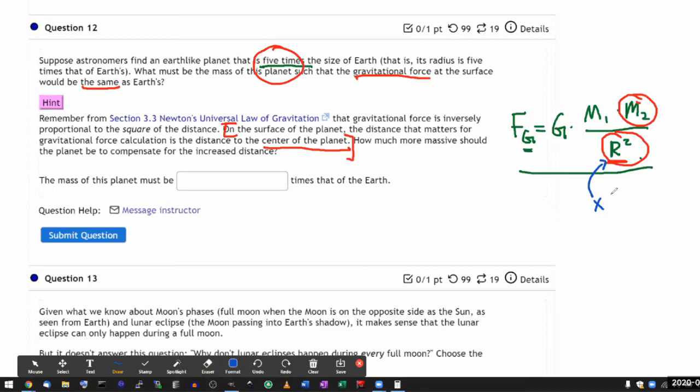By the way, the number is randomized, it will change for every person. Then this r squared is going to increase by a factor of five squared. And my goal is to keep this entire expression the same. This doesn't change, this doesn't change. The only thing that will be changing is the mass of the planet.